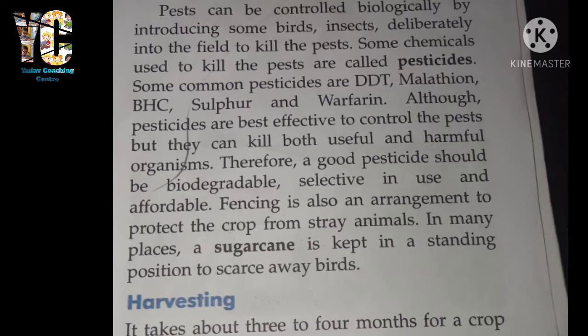Another method is fencing — just fence the fields so stray animals like dogs, cows, and donkeys cannot enter. In many places, sugarcane is kept in a standing position to scare away birds. There is also a scarecrow — we put up a bamboo stick in the field in a cross shape, put human clothes on it with a pot on top, and keep a cloth like a turban on the pot. Birds get scared and don't attack the crops.